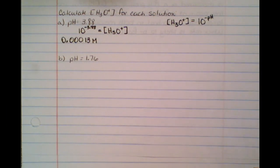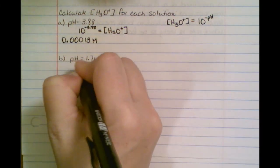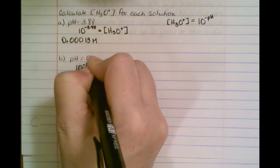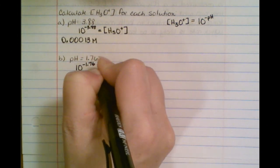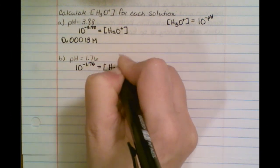So then the second example I have is for another pH. So it's going to just automatically be 10 to the minus 1.76. That's going to equal your hydronium concentration.